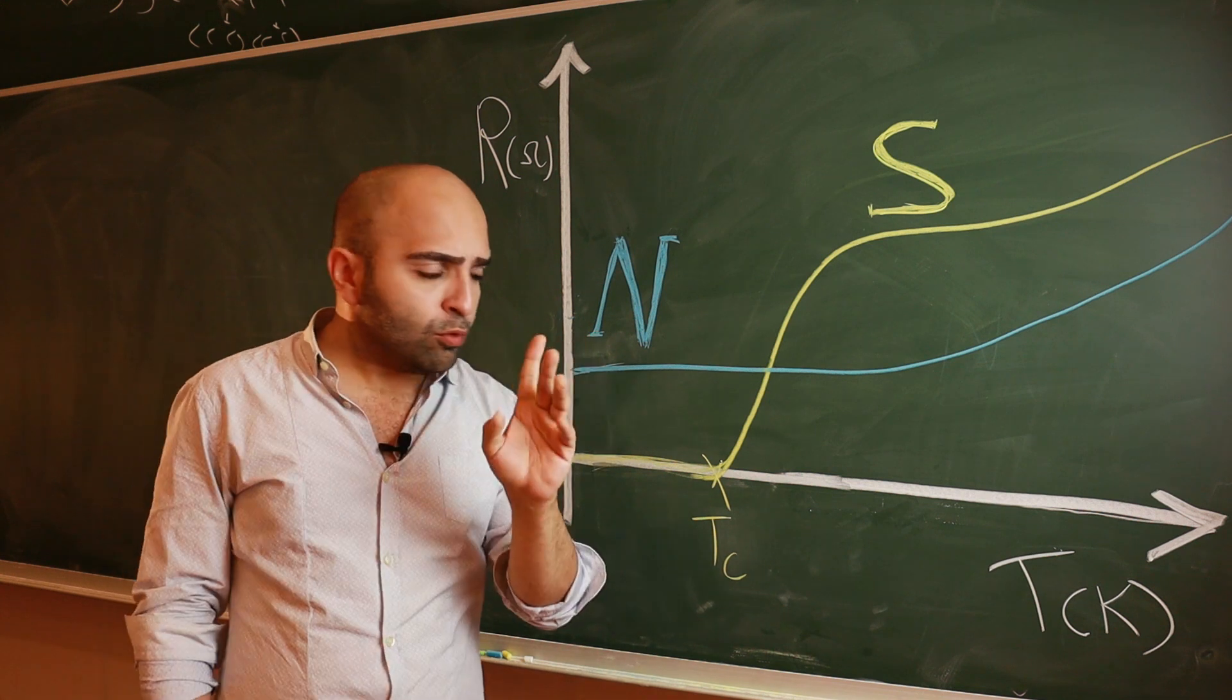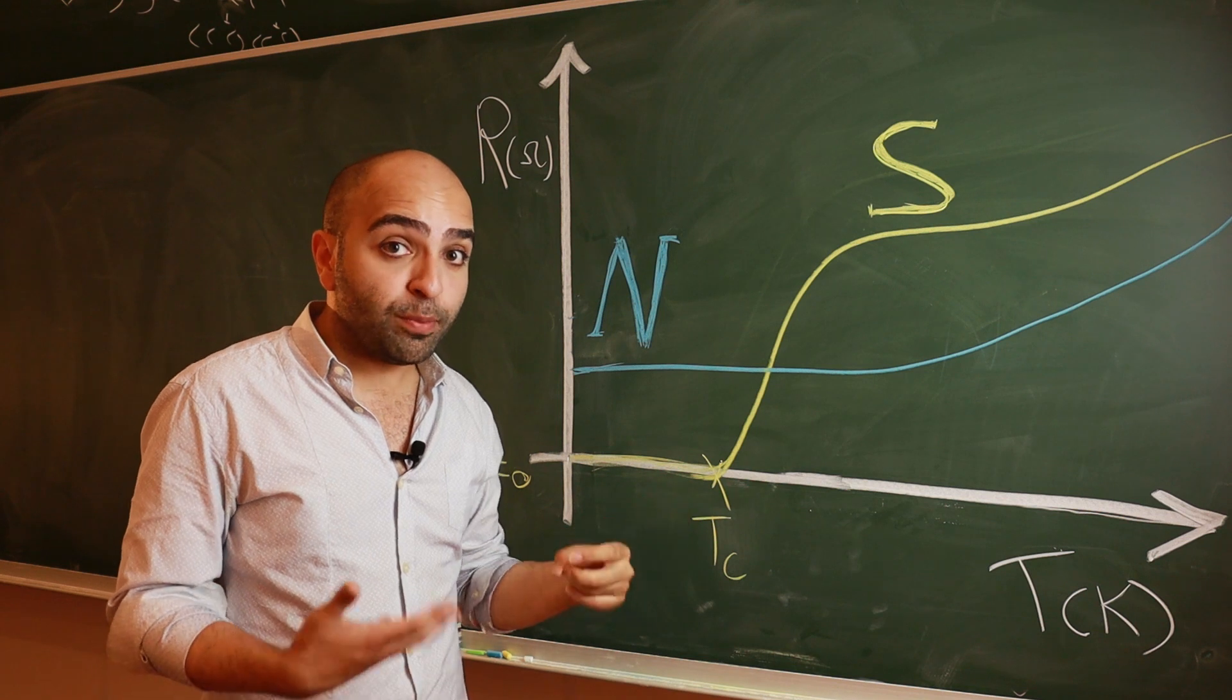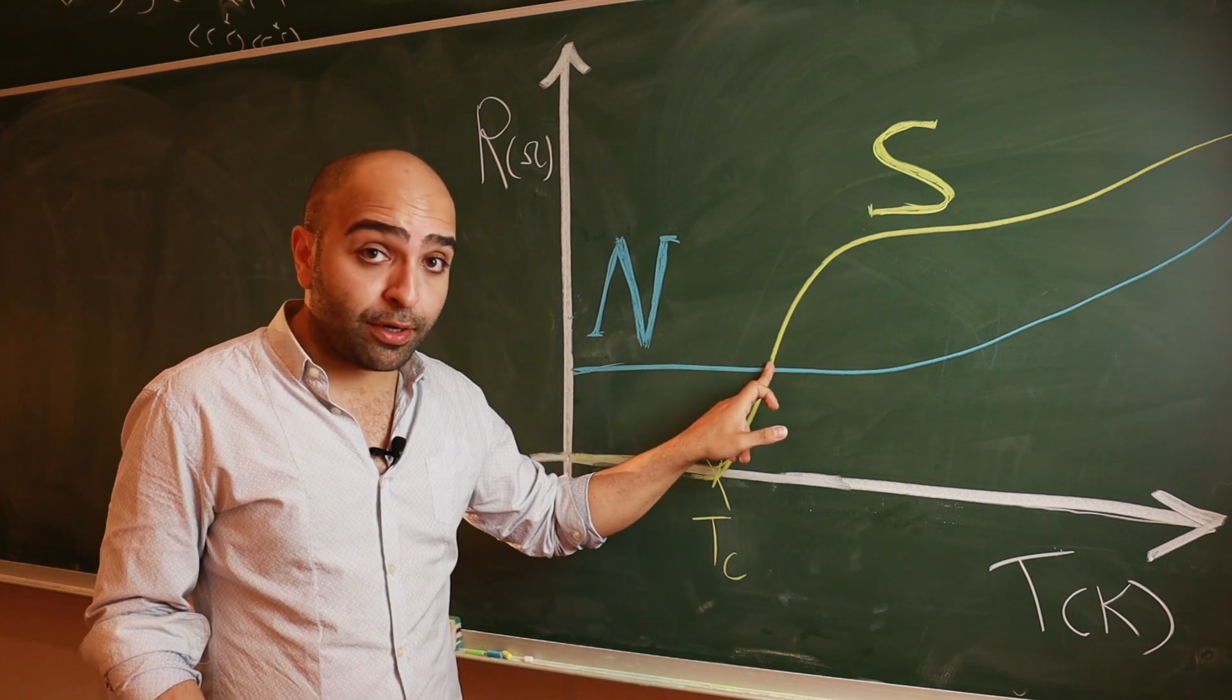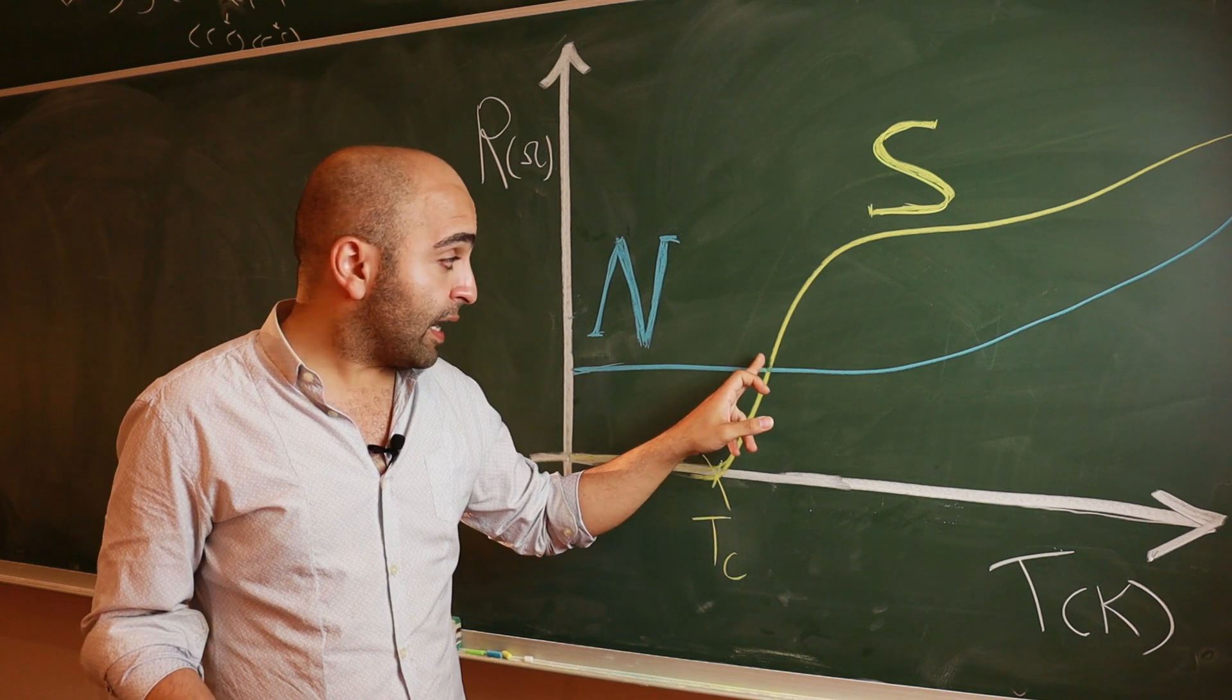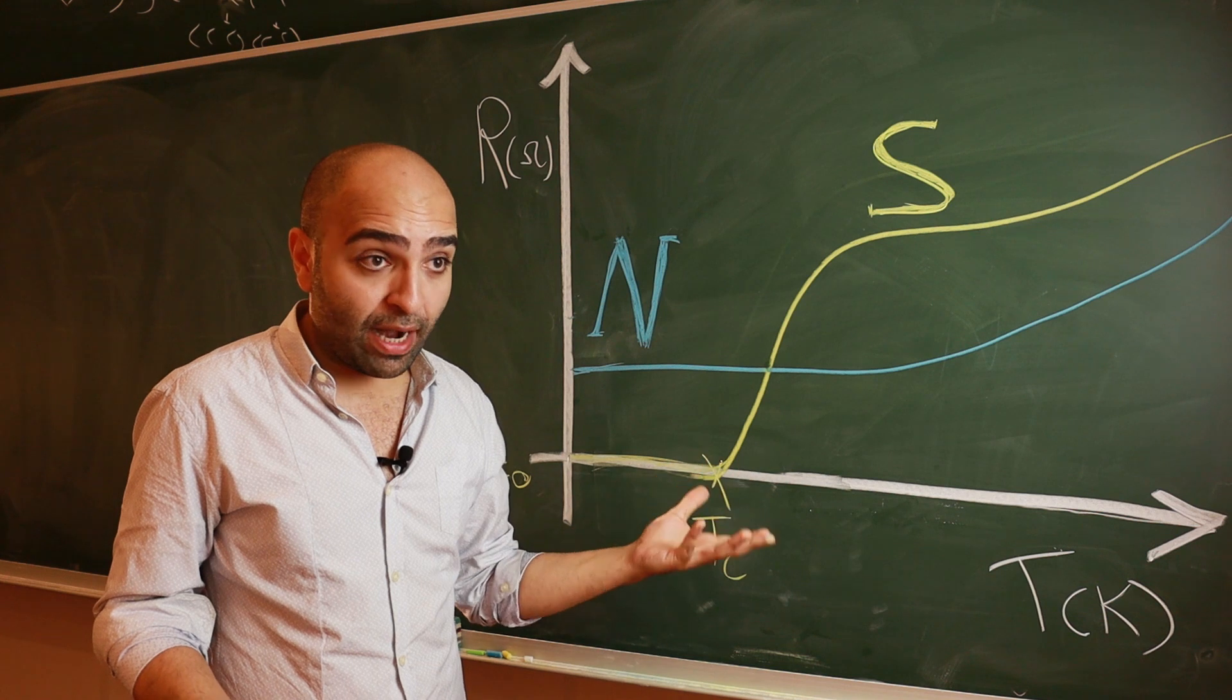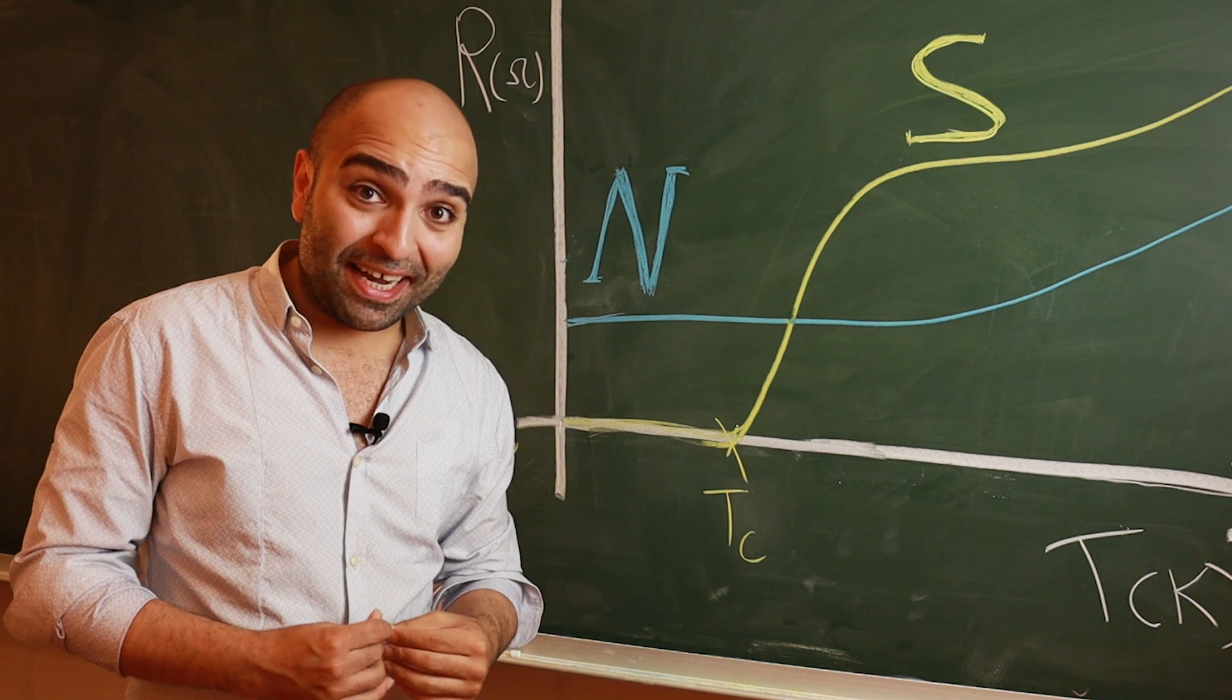But suppose we stop the cooling halfway through the transition, while the superconductor still has some resistance. Now at this point, you might be tempted to think that there's not much difference between these two systems, or at least they should be somewhat similar. That is absolutely not the case.